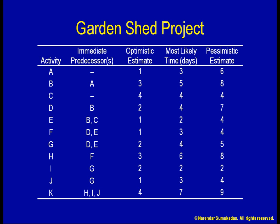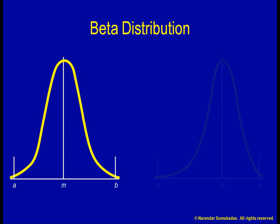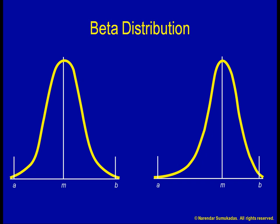With three time estimates to choose from, what number should I use on my network diagram or Gantt chart to figure out the project schedule? To make sense of the time estimates, a useful assumption to make is that the estimates follow the beta distribution. The beta distribution is a family of distributions that can have different shapes, but time estimates usually follow beta distributions that are either symmetrical or skewed to one side.